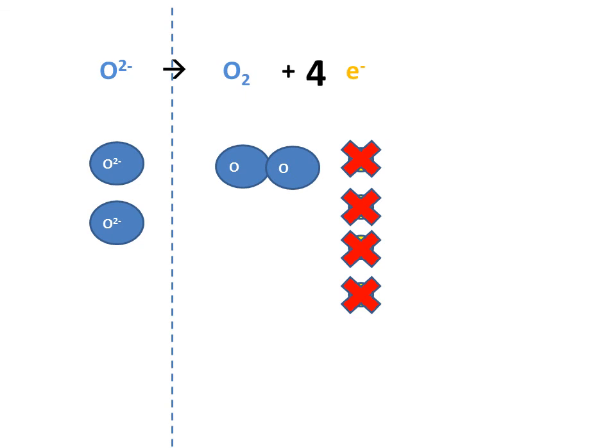So in front of the e sign here, I need to write a big 4. As I also have two ions, in front of the O2- ion sign, I also need to write a big 2. This is the half equation for the oxidation of oxygen.